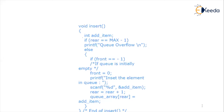For the queue insertion using array, the insert function takes an integer item as argument. If rear equals max-1 (i.e., n-1), it means queue overflow — the queue is full. If it is not full and front equals -1, we set front to zero. We then increment rear and store the item at queue[rear]. This is similar to stack insertion except we use the rear increment and initialize front to zero.